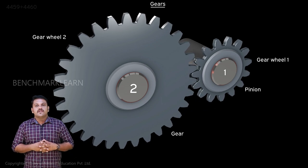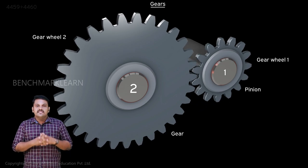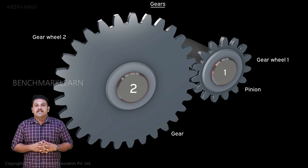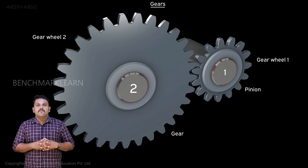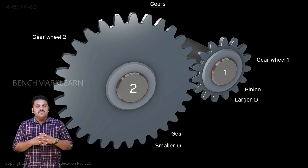When the two gears are in contact and transmit motion, the angular velocity is inversely proportional to the size of the gear wheel. Since the pinion is the smaller wheel, it will have a larger angular velocity compared to that of the gear, which is the bigger wheel.